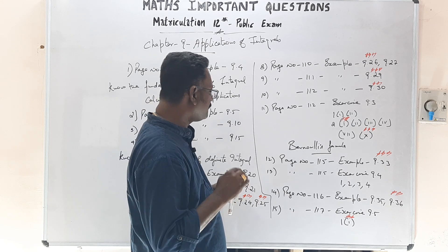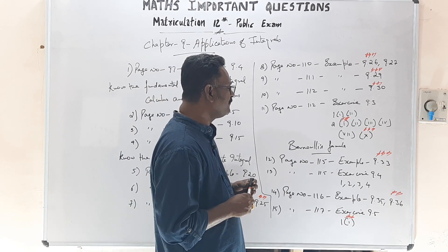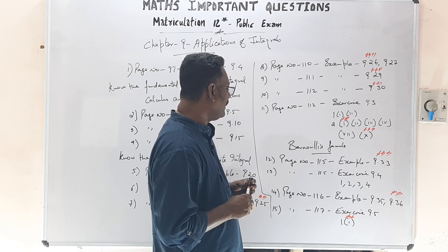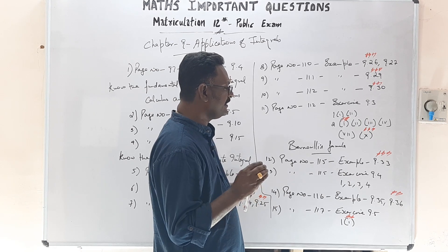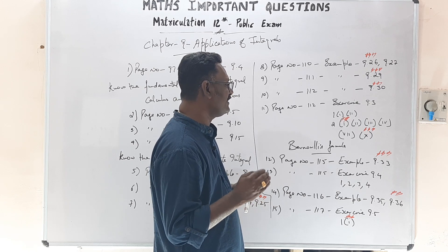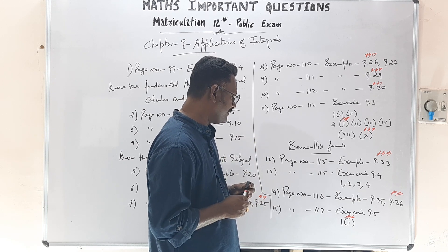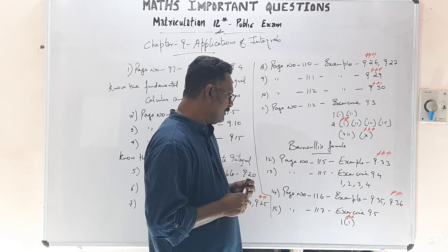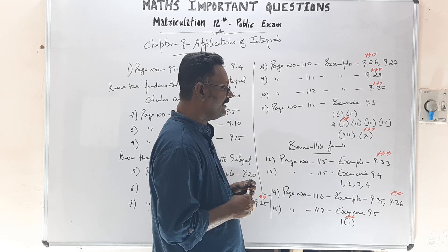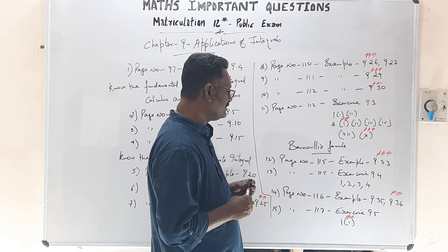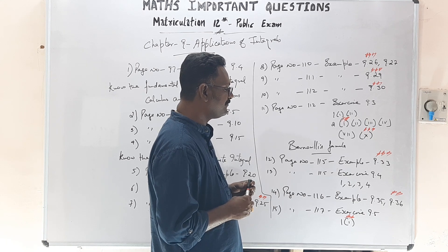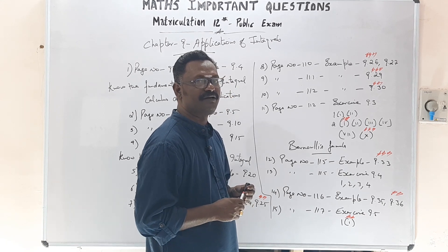At the topic Bernoulli's Formula: Page 115, Example 9.33, and Page 115 Exercise 9.40 — 1st, 2nd, and 3rd sums are very important. Page 116, Examples 9.35 and 9.36. Page 117, Exercise 9.50, 1st Sum and 1st Sub-question are very important.